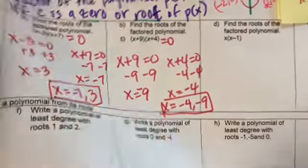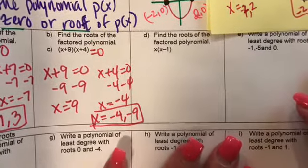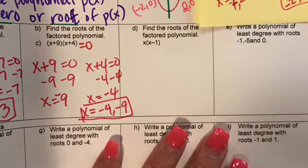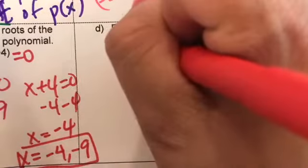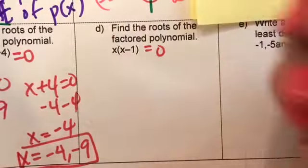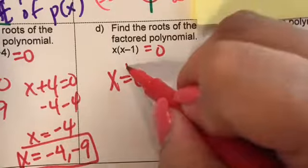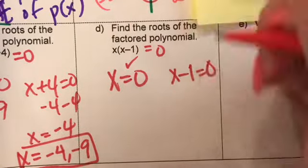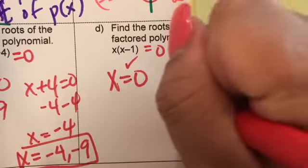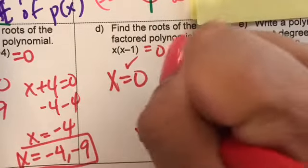This situation is a little different. It's asking us to find the roots of the factored polynomial. Set it equal to zero: X equals zero — that's the first root. Then X minus one equals zero, so X equals one. The roots are zero and one.